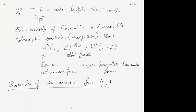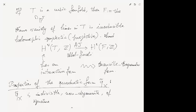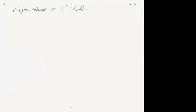The quadratic form qX̃ has several properties: it is non-degenerate; over the reals it has signature (3, b₂ − 3) when restricted to H²(X, ℝ); and it is integer-valued on H²(X, ℤ).